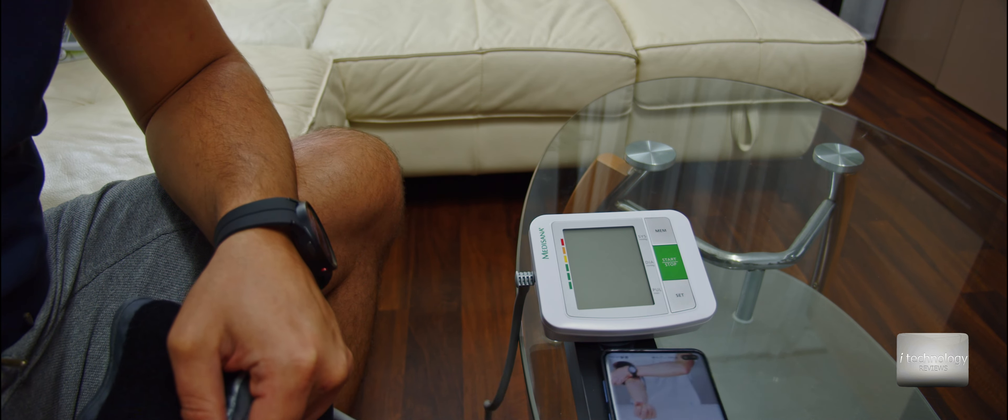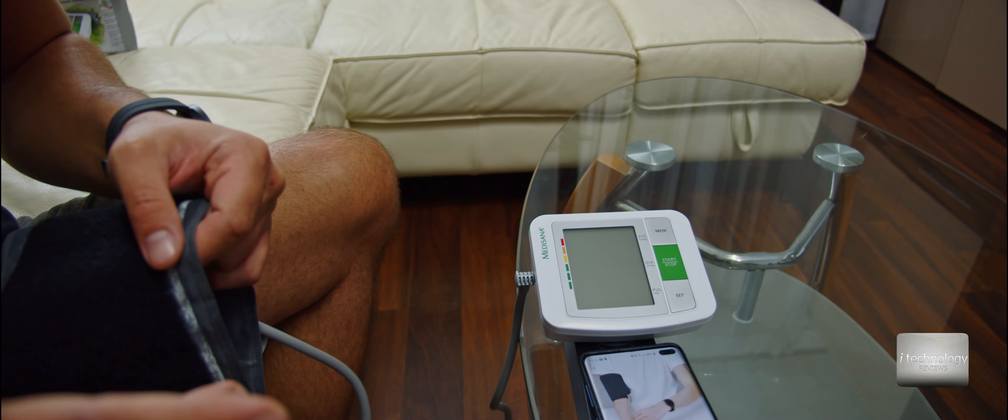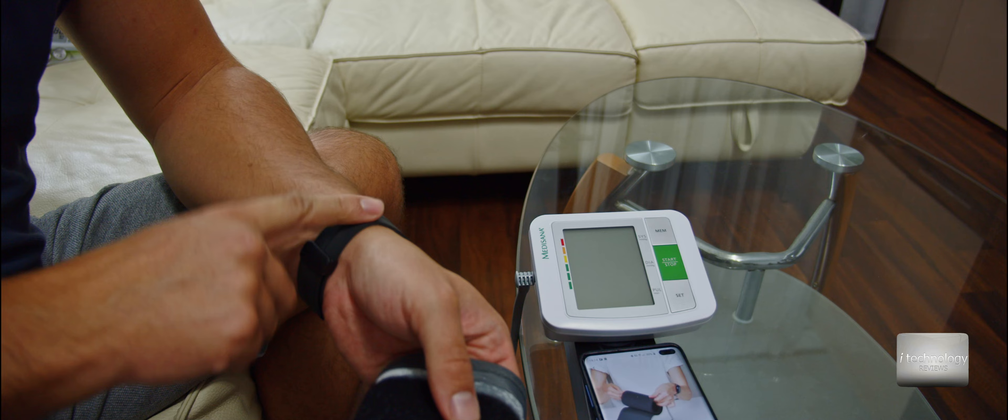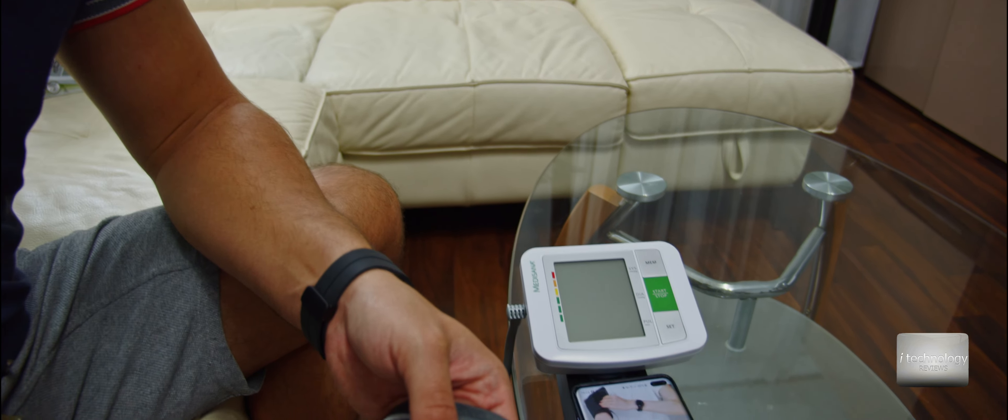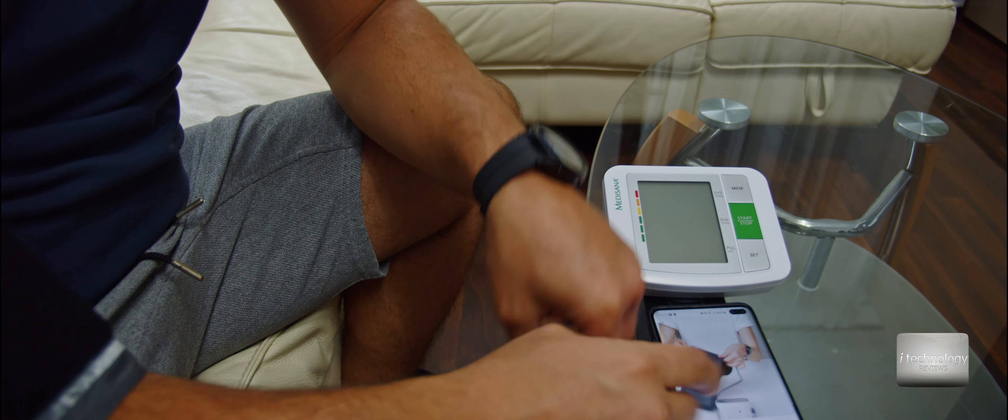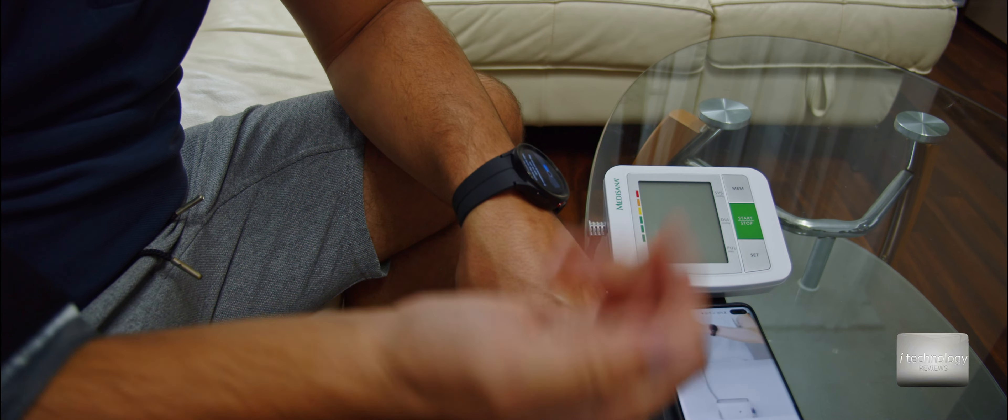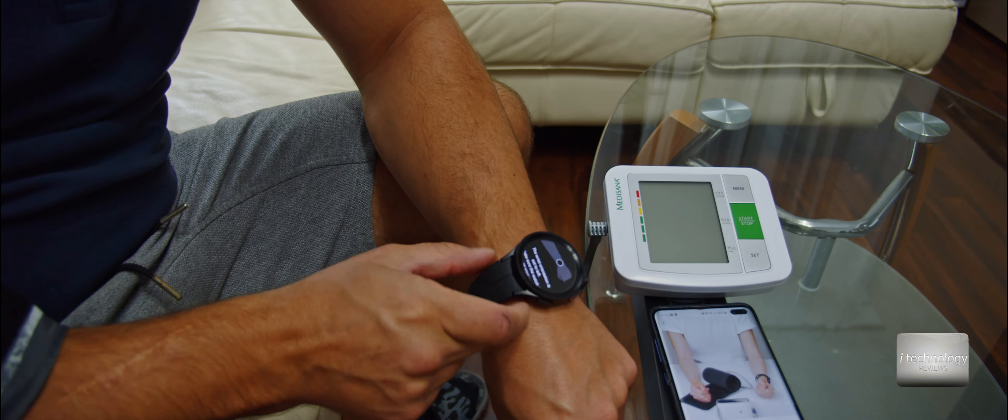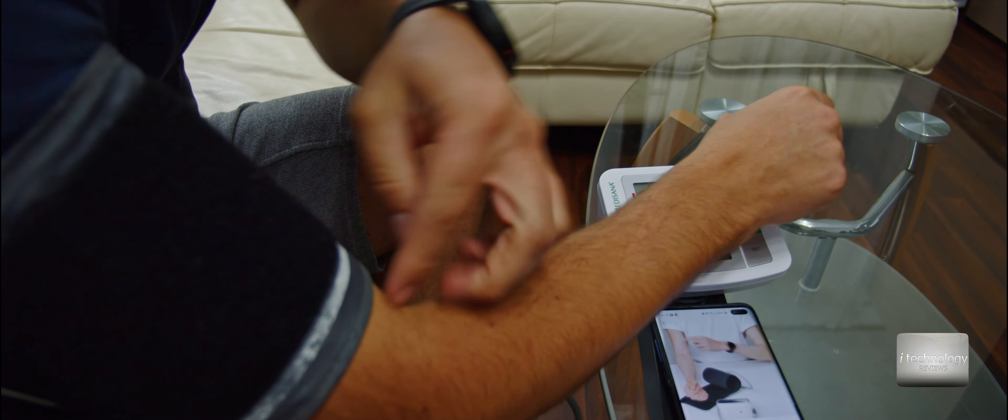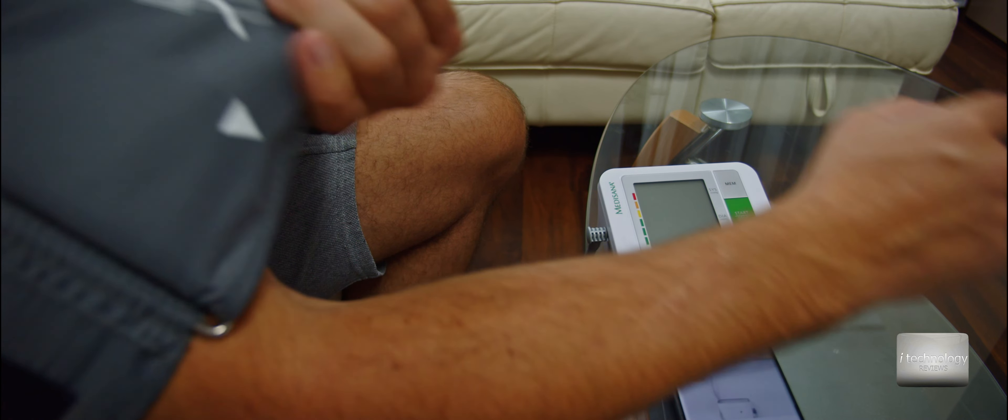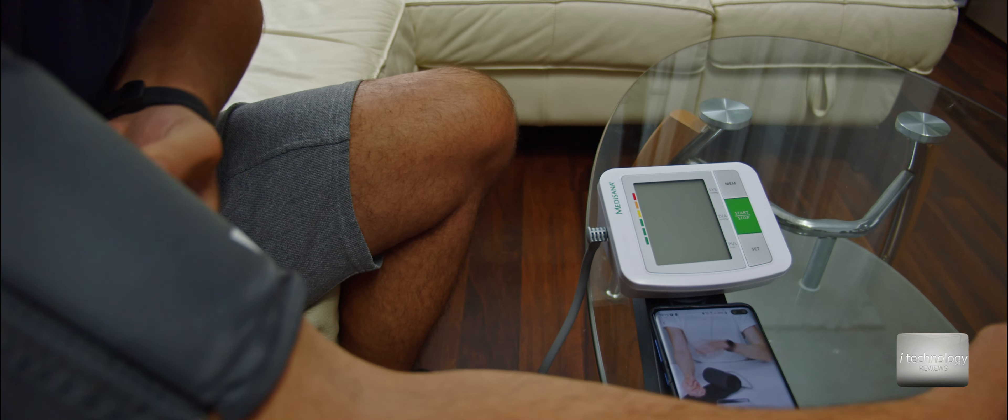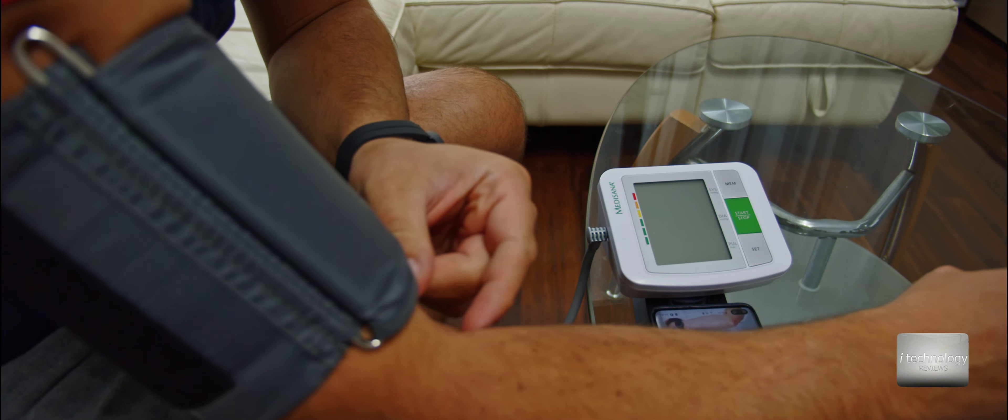You've got to put it on the other hand, because if you are putting it on the same hand, it will not measure quite good. Let me put it on my other arm. You've got to put the medical device to the other arm. If you're putting it on the arm that has the watch, it will not be accurate. Leave two or three centimeters right to the elbow and put it tight.